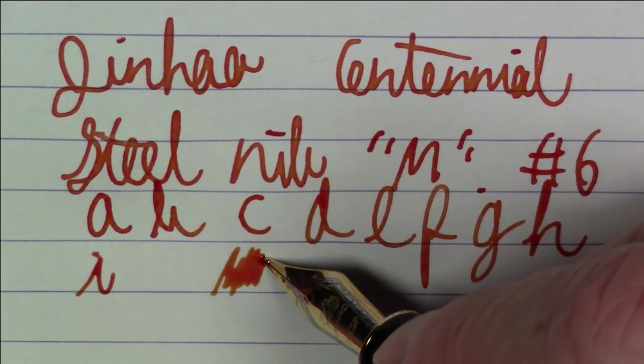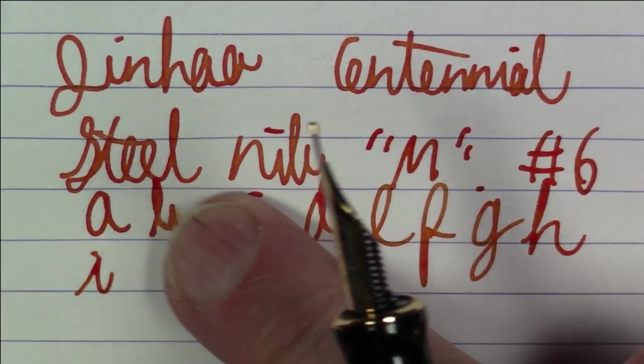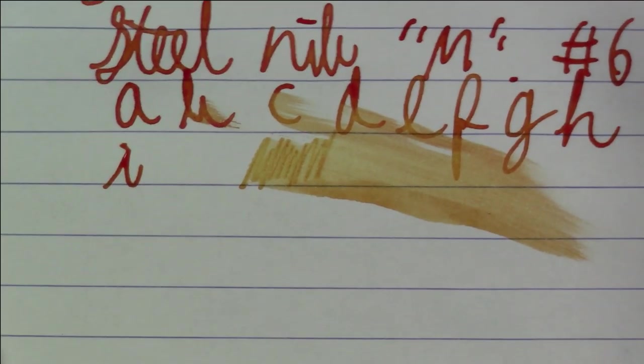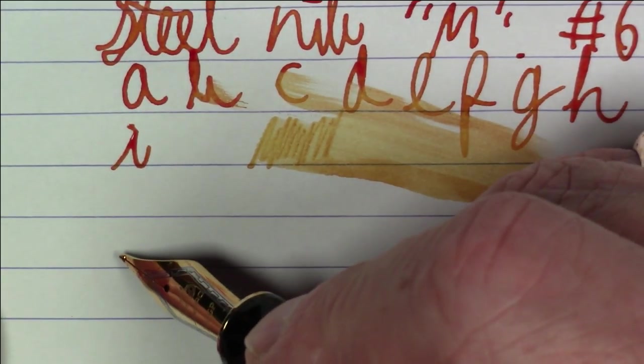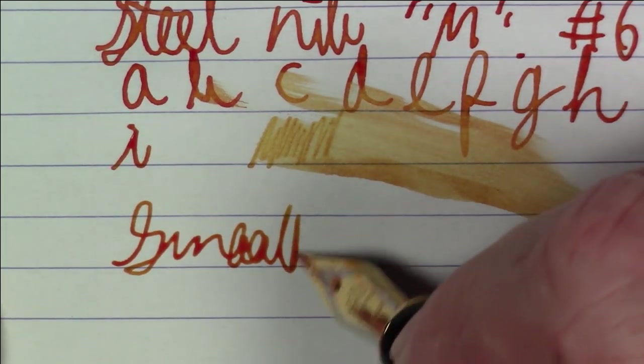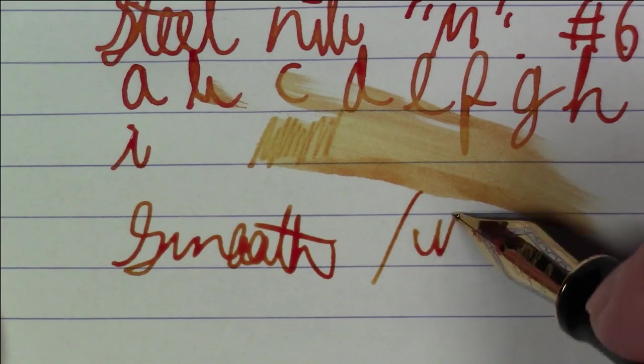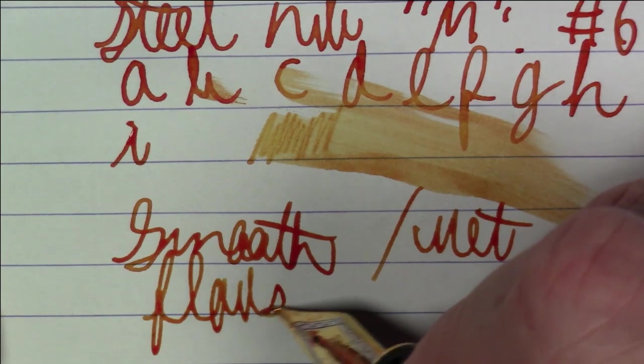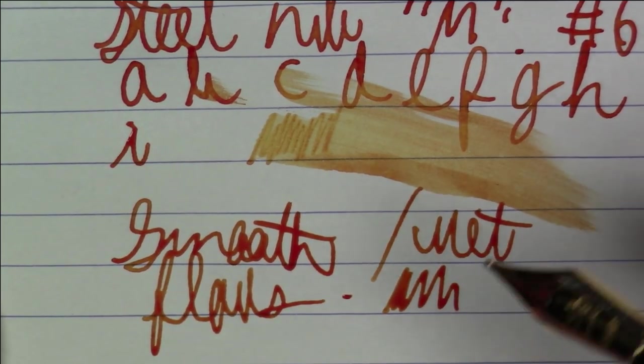So, this is just a nice nib. I really like the way it writes. It's extremely smooth. It's nicely wet. I'd say it's definitely on the wet side. So, like we said, it's a smooth nib. It's a wet nib. The pen itself flows very well. Very nice.